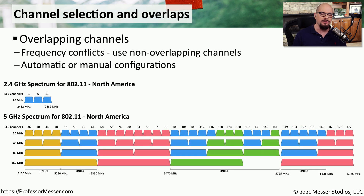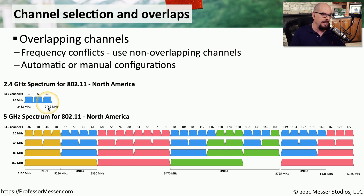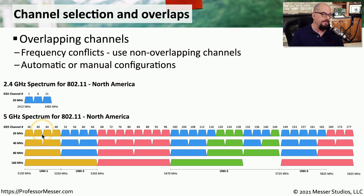To avoid interference between access points, we need to make sure that access points near each other are not using the same frequencies. For 2.4 GHz, there are very few channels that don't overlap with each other. In the United States, channels 1, 6, and 11 have no interference between each other. If you're using 5 GHz access points, you have many more channels available, giving you much more flexibility for installing wireless access points.